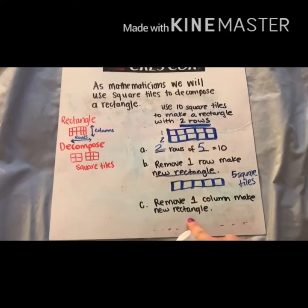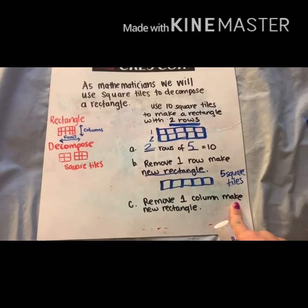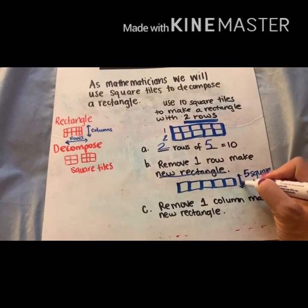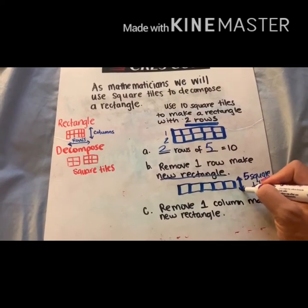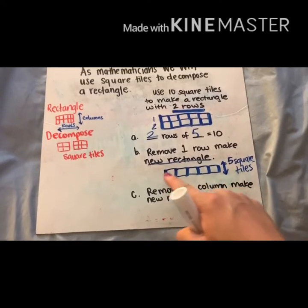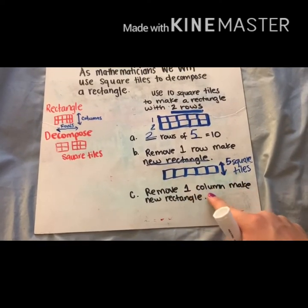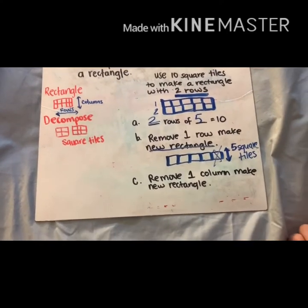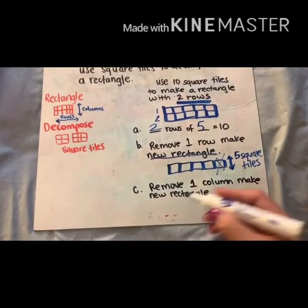Now the last one is asking me to remove a column. Remember columns go up and down. These are columns, right? They go up and down. So it's just to take one away. That means I just have to take this one away.